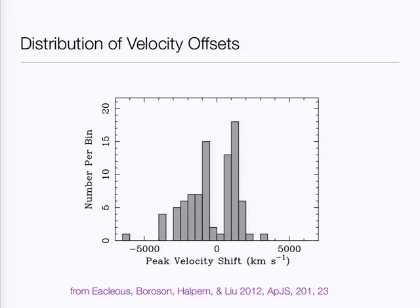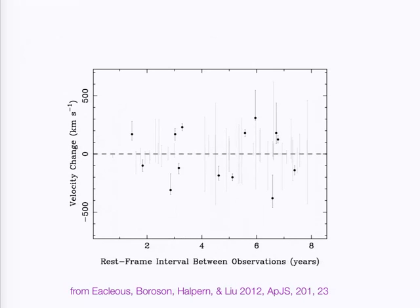If our baseline is between 5 and 10 years, the shifts might change by 100 to 200 kilometers per second. So we went and re-observed our sample with a series of telescopes and plotted the changes in velocity — which you can think of as an acceleration times the time interval. In about 20% of our targets, the lines moved — some to the blue, others to the red. The amount by which they moved is more or less consistent with our expectations. However, the rest-frame time interval between observations doesn't really influence how big the shift is, which tells us we're looking at a population with a wide variety of projection angles and a wide range of periods.